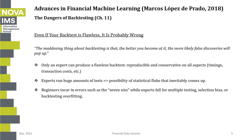Even if your backtest is flawless, it is still probably wrong. The maddening thing about backtesting is that the better you become at it, the more likely false discoveries will pop up. Only an expert can produce a truly flawless backtest — one that is reproducible and conservative on all aspects such as timings and transaction costs. But to become an expert, you need to run huge amounts of backtesting, and in doing so you inevitably increase the possibility of a statistical fluke — a false positive.